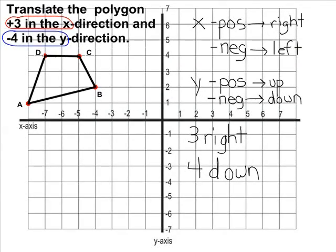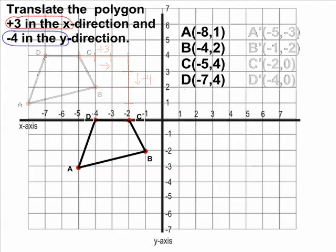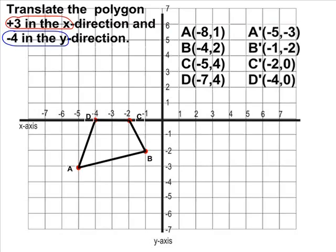To accomplish this, there are a couple ways of doing this. You can take each point and simply count 3 over to the right and 4 over down and then label your new point. Or you can just write the coordinates of your original points and then for the x value, you can just add 3 to each of the x values to see where your point is going to end up.